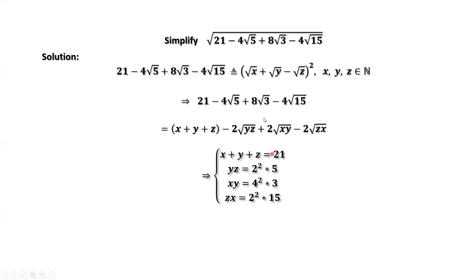Similarly here, 8 equals 2 times 4. We need to put 4 inside of this square root. It should be 4 square times 3. This 4 is 2 times 2. Put 2 back inside of this square root. It is 2 square times 15.